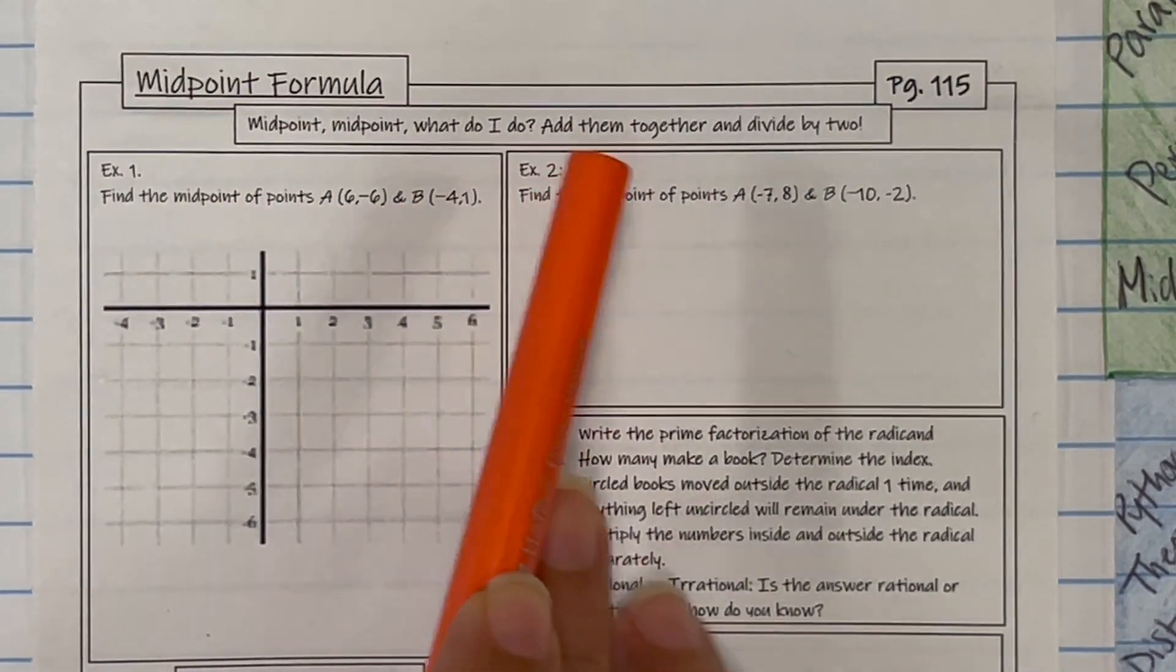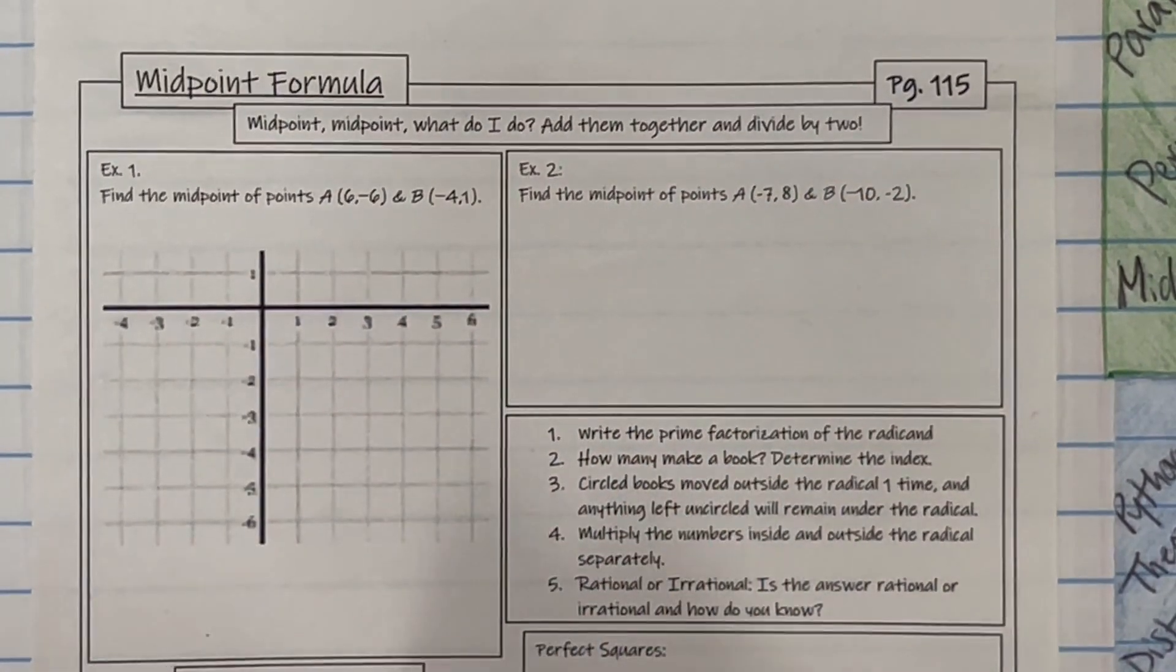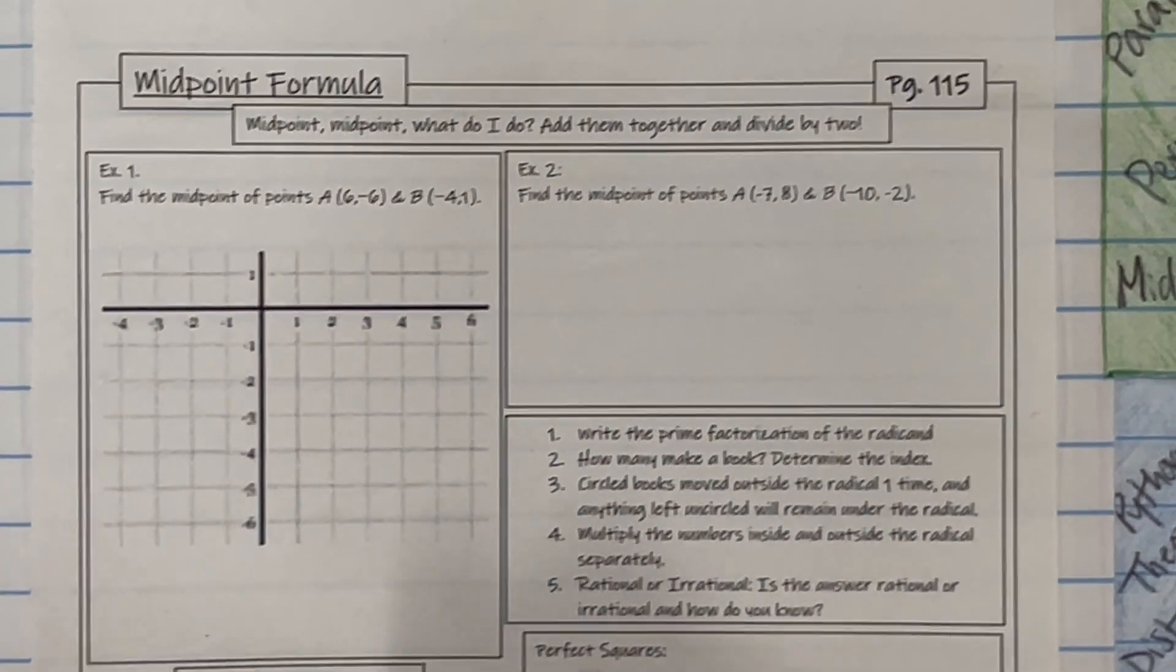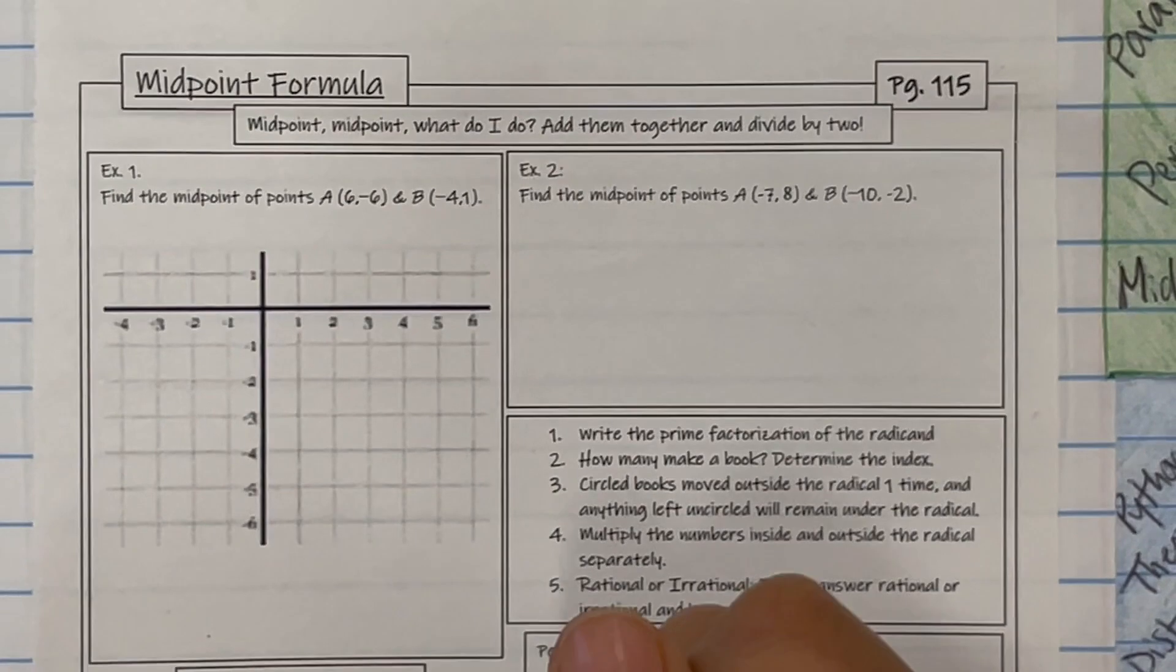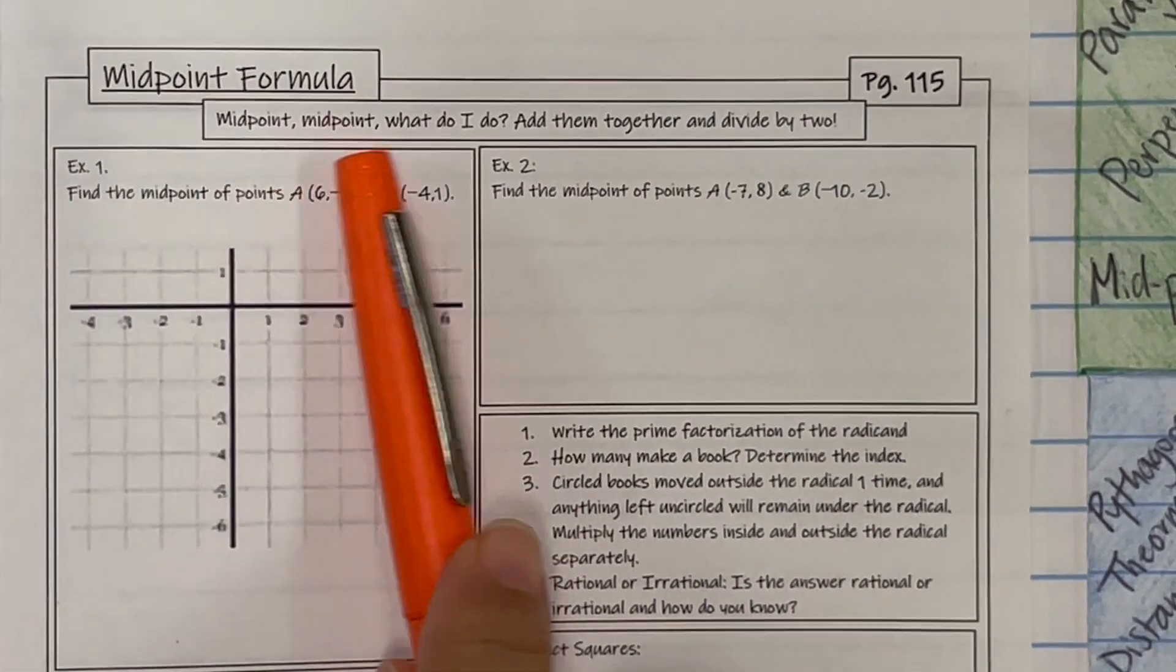Midpoint, midpoint, what do I do? Add them together and divide by two. And that's really all you have to do.